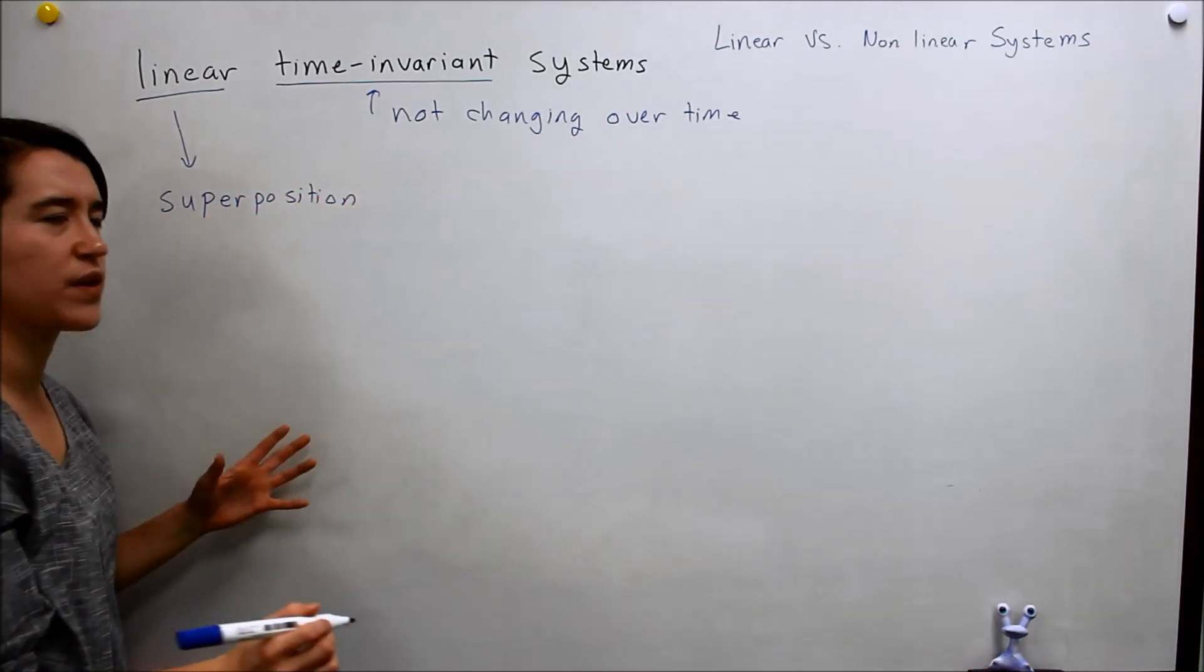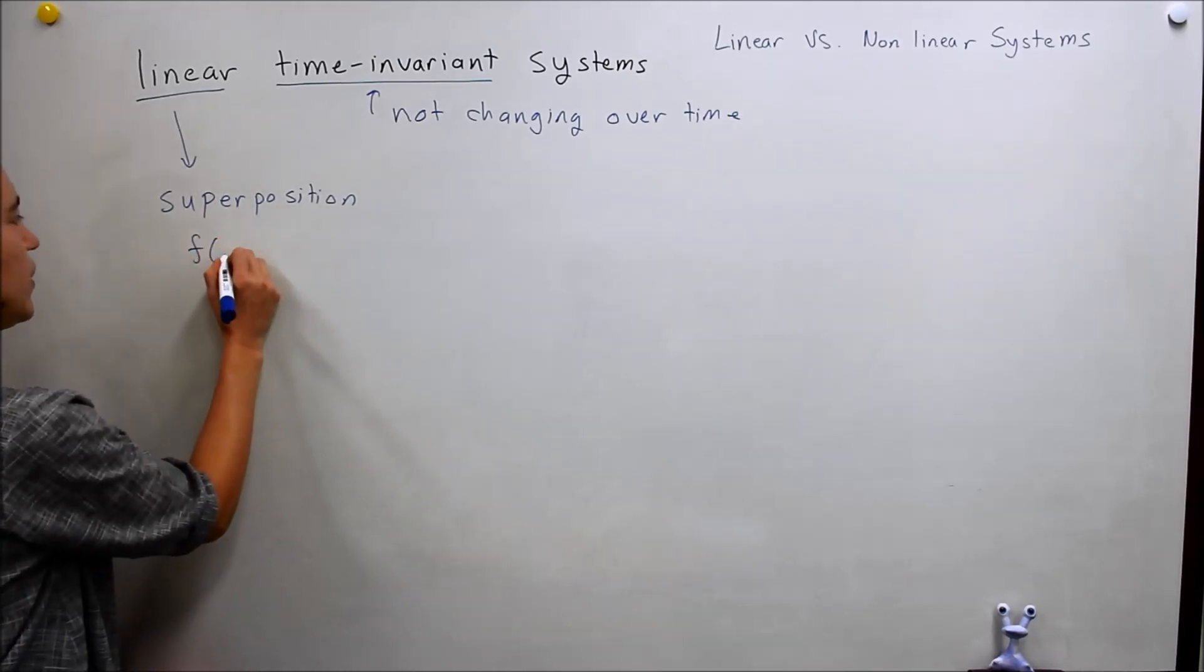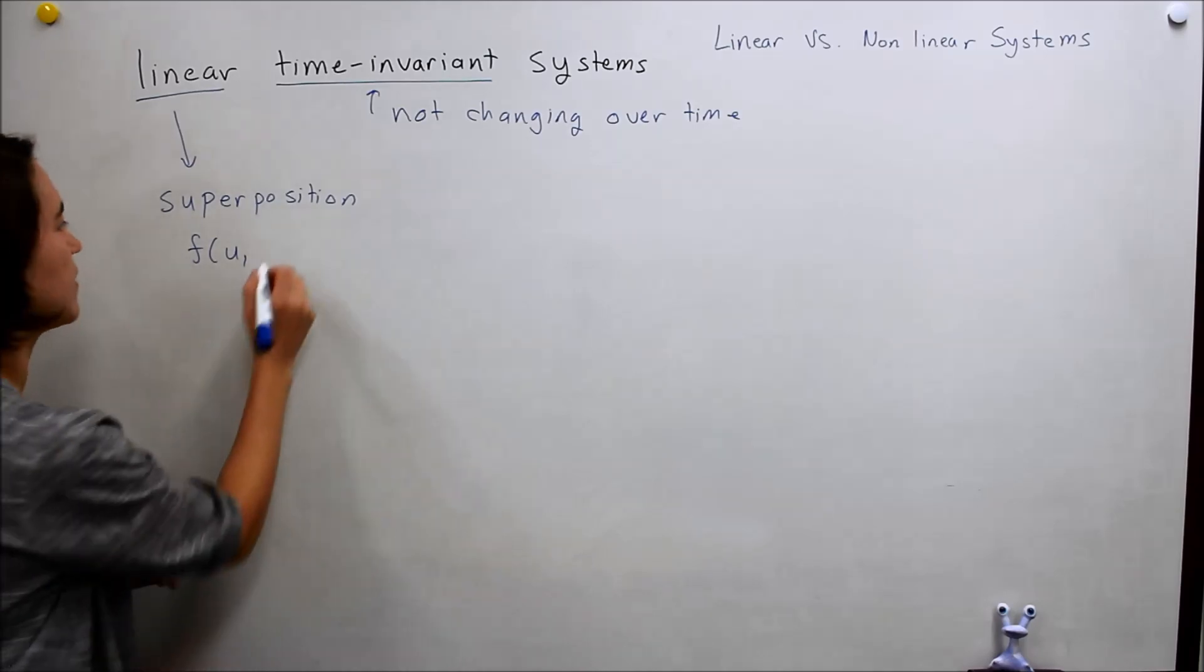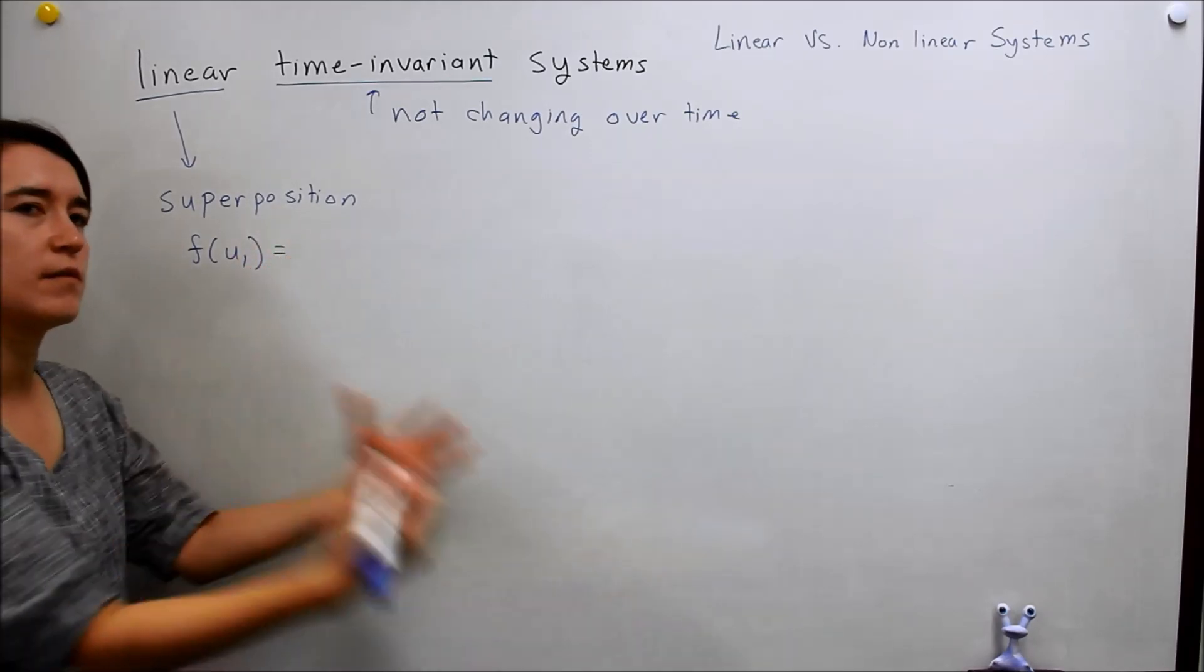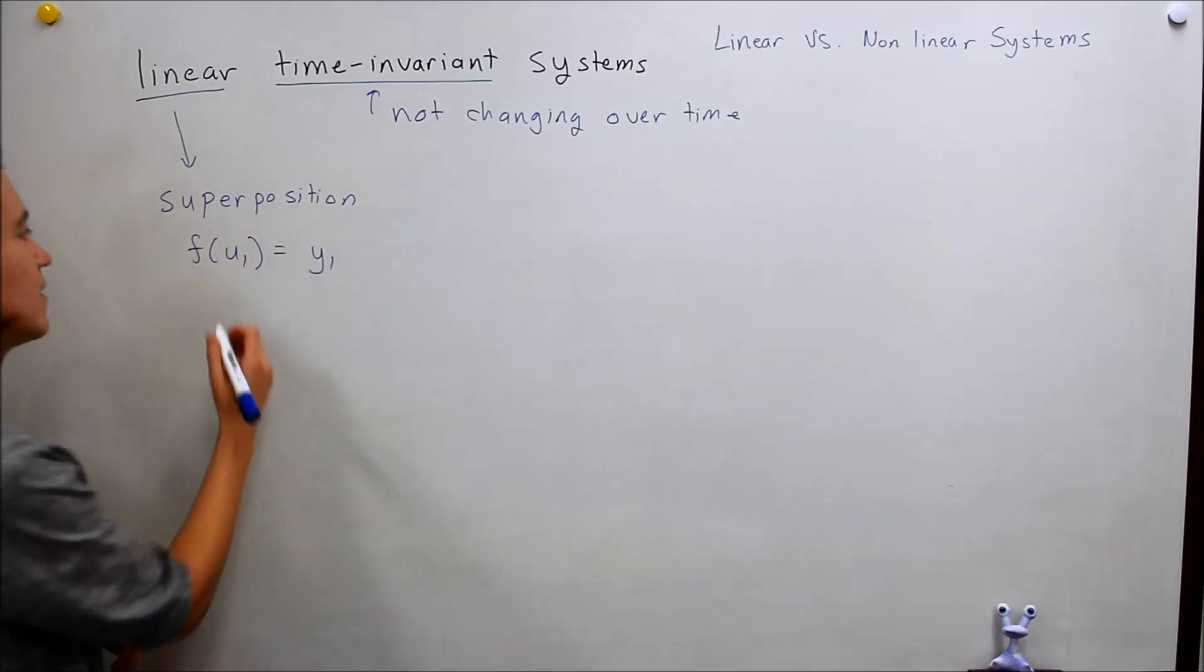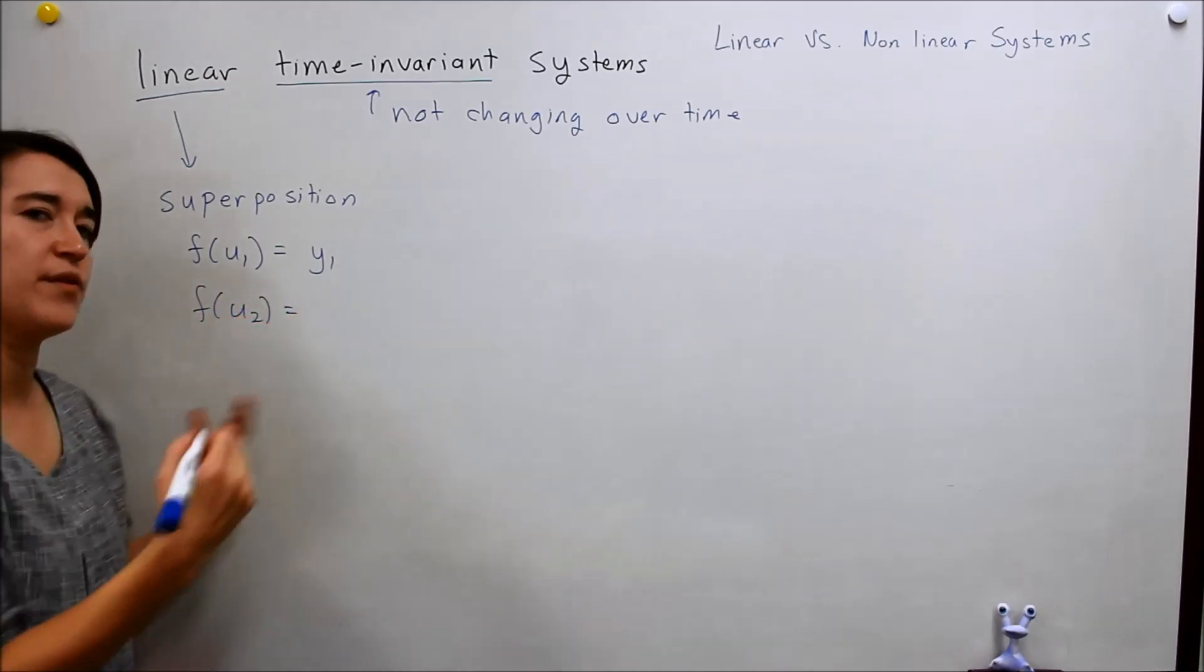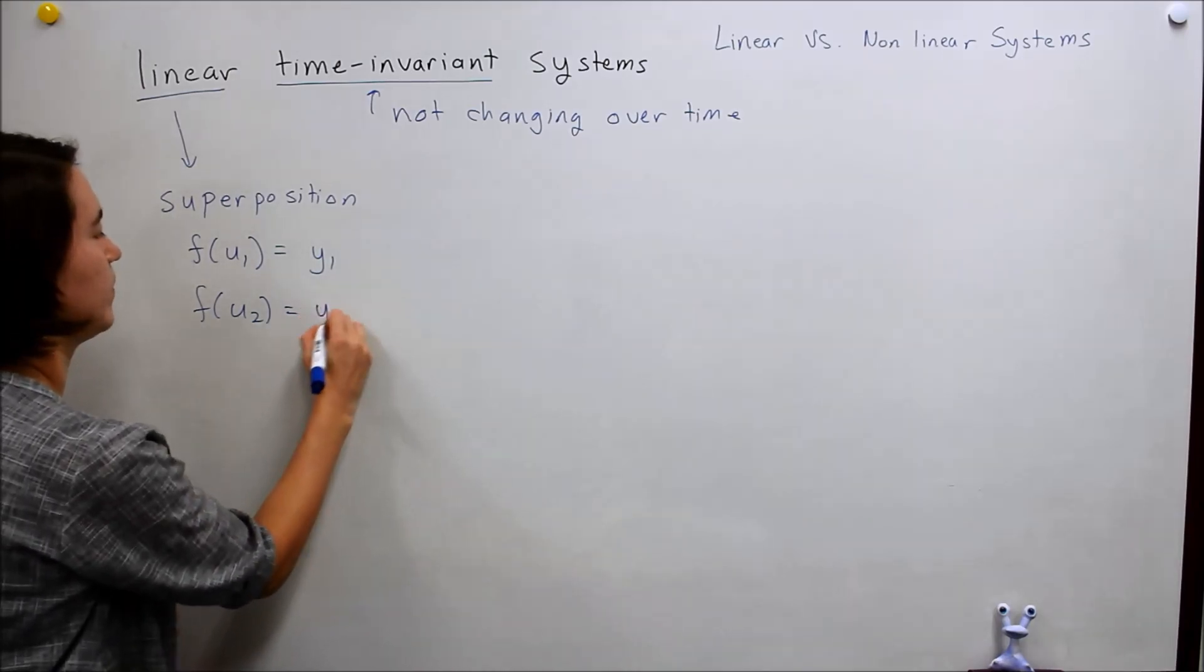And if you recall what this means, say you have an input of u1, and you put it into a system. And your system outputs y1. And then you change the input, make it u2, and your system gives you a different output, y2.